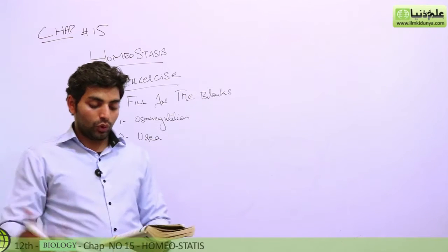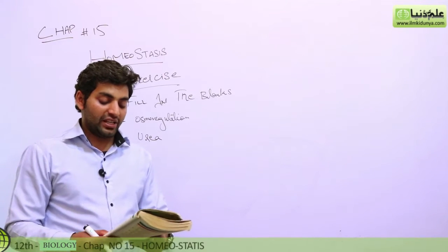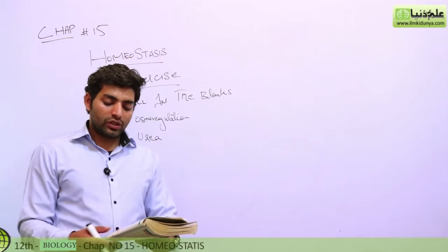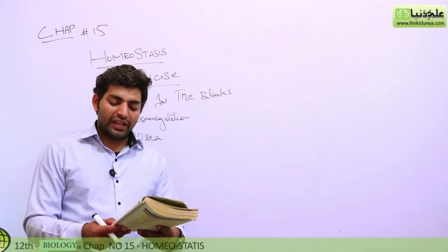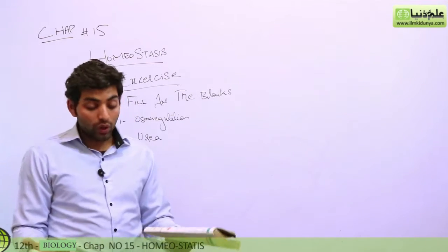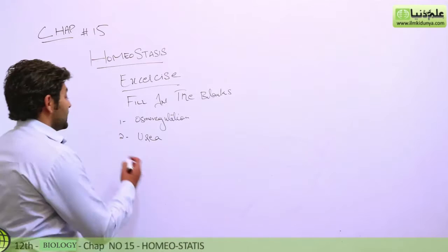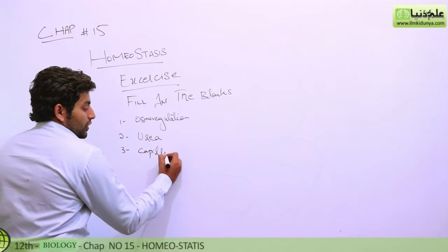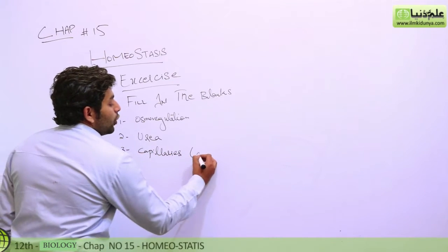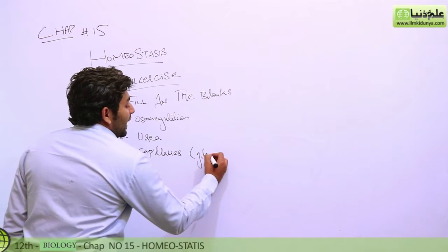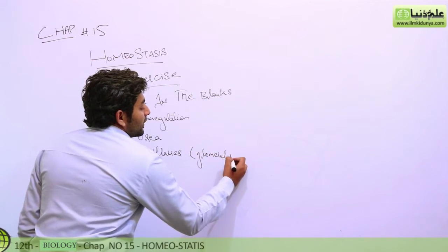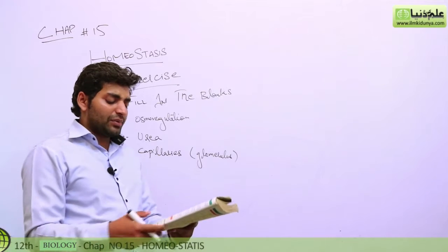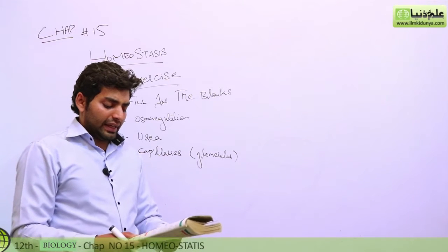The third blank: the kidney nephron is closely associated with a network of capillaries — specifically the glomerulus, which is made of capillaries.